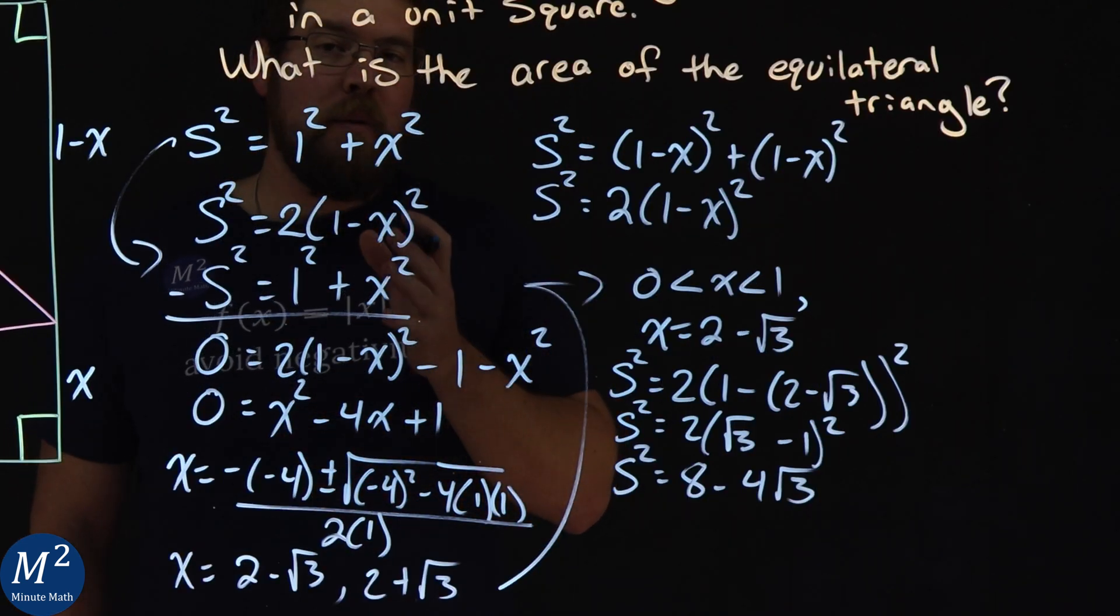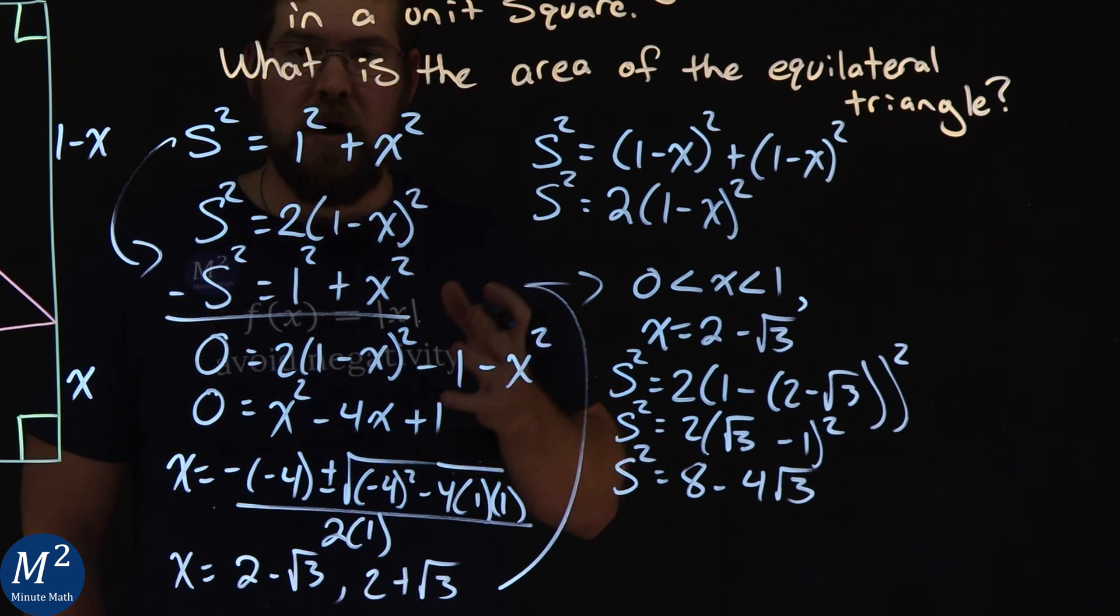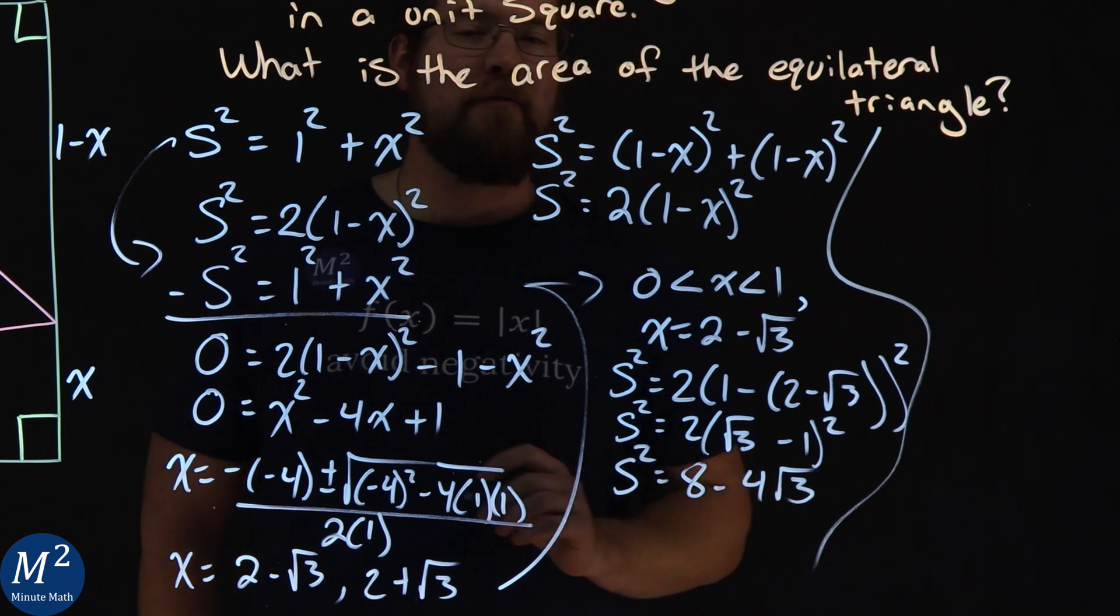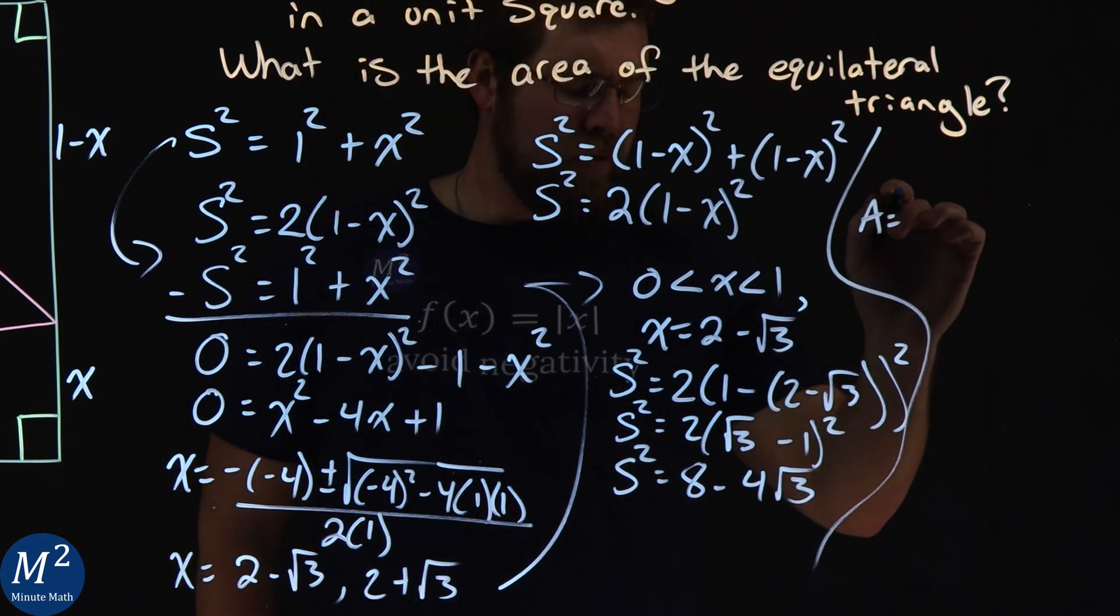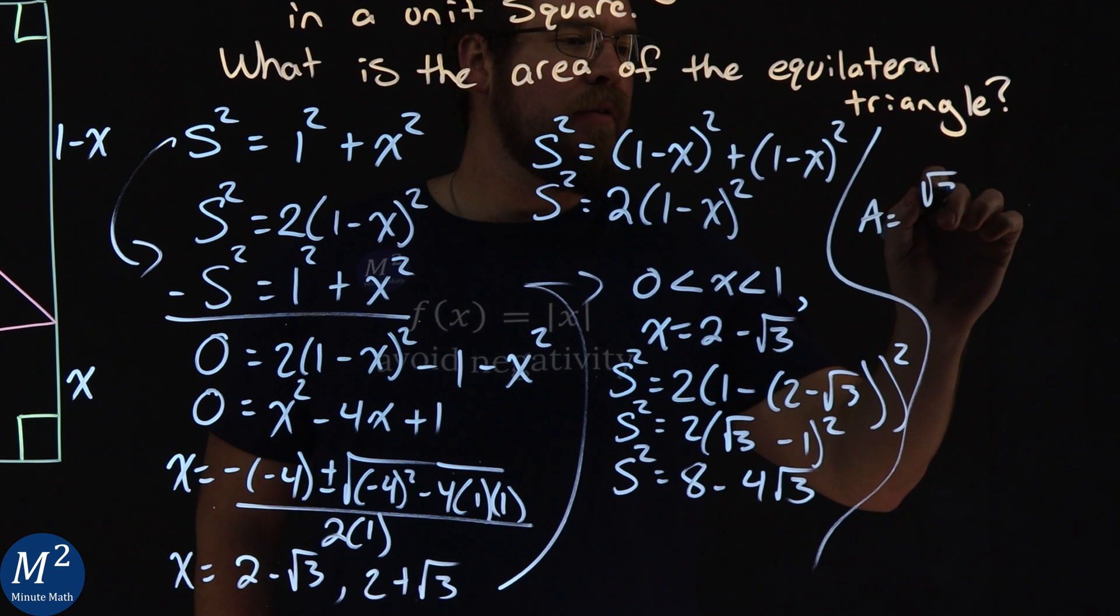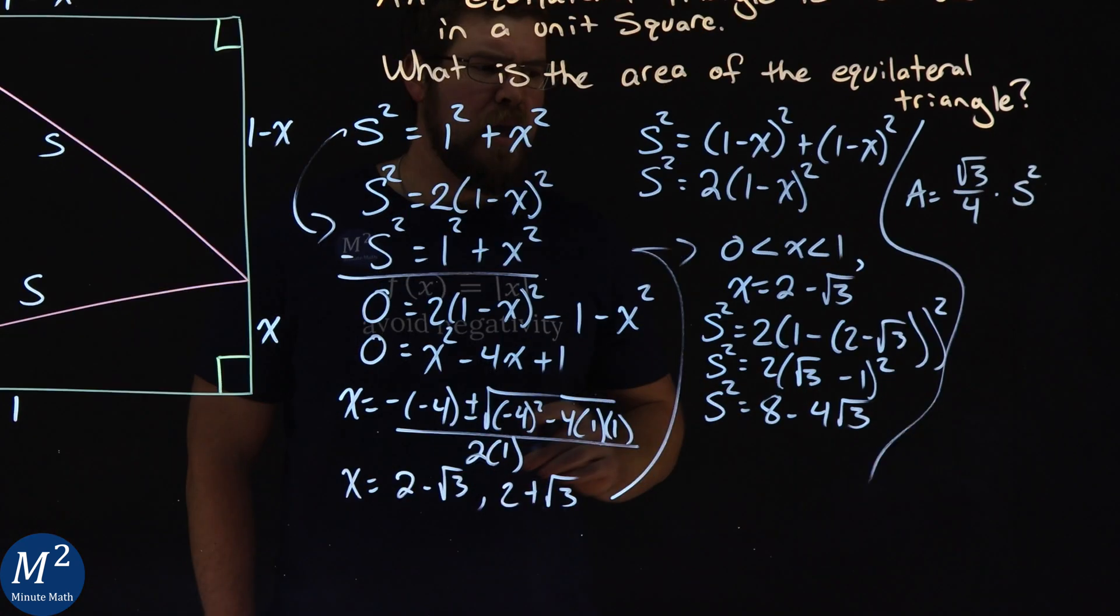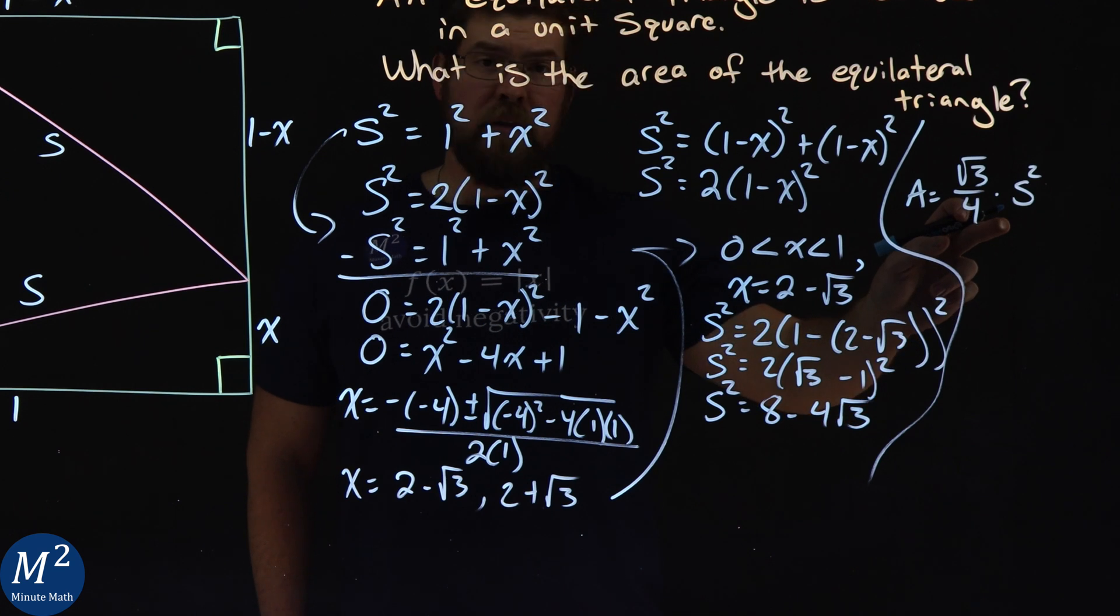We now need to apply what we know about the area of an equilateral triangle. It has a special formula here. The area of the equilateral triangle is equal to the square root of 3 over 4 times the side length squared.